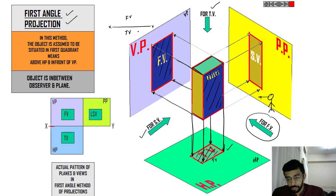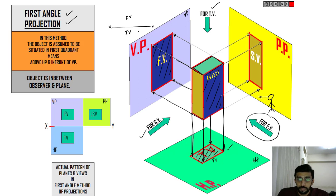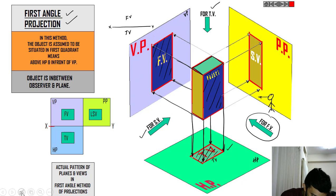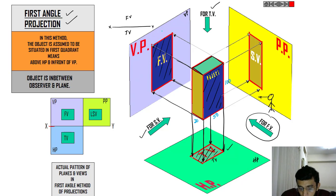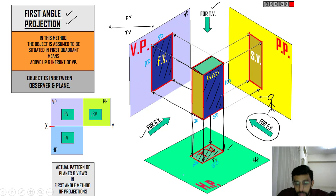Now look at the side view. For example, I will give some dimensions. Say the height is 100, the width is 50, and the depth is 20. So the front view is going to be 50 into 100. The top view is going to be 50 into 20. And the side view is going to be 100 into 20.